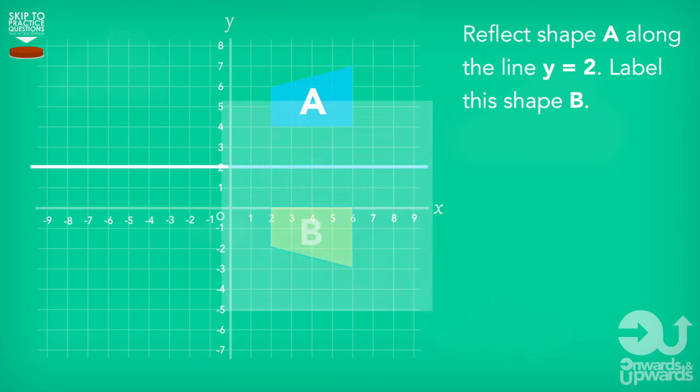We simply draw this in on the real sheet of paper, and we label the shape B. Question done.